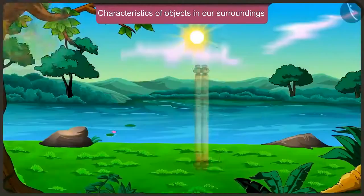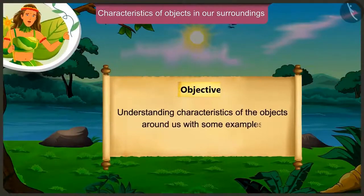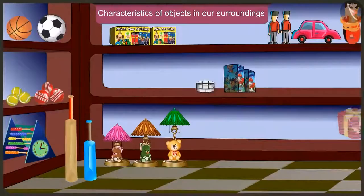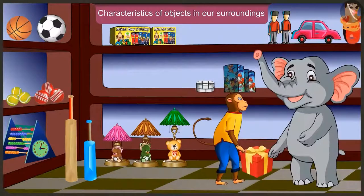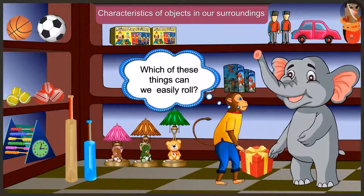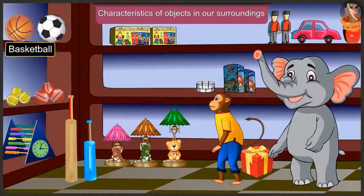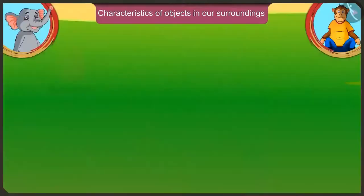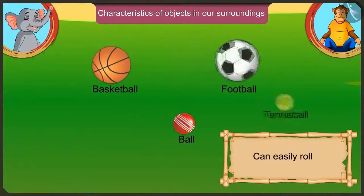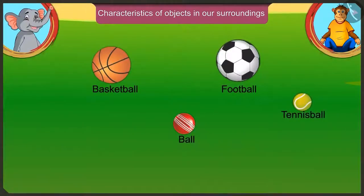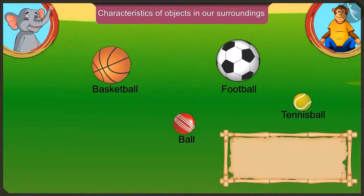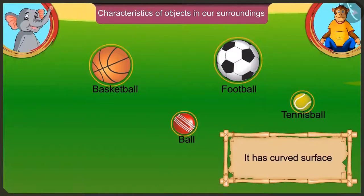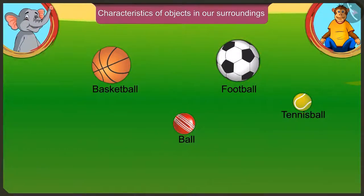Today we will understand the characteristics of the objects around us with some examples. Which of these things can be easily rolled? We can easily roll a basketball, ball, football and tennis ball, because they don't have any corners and they have a curved surface.